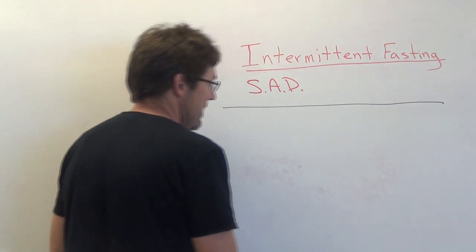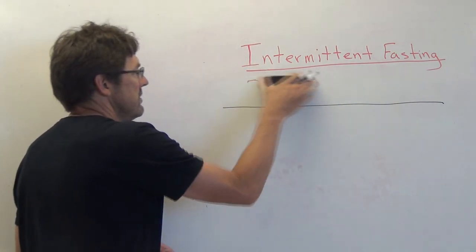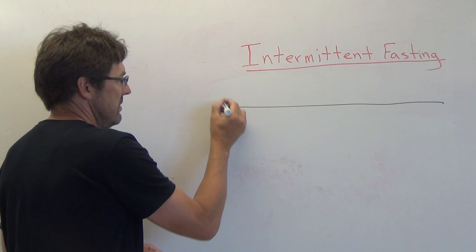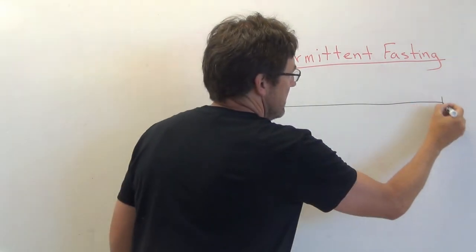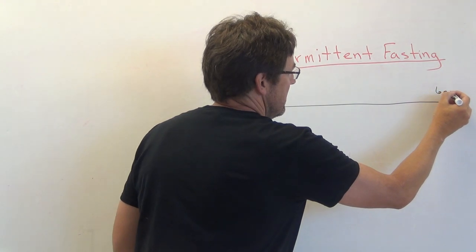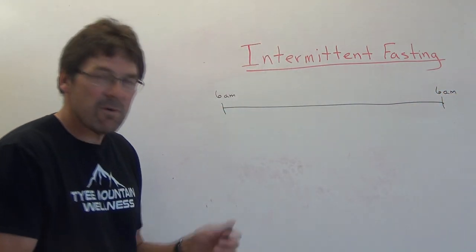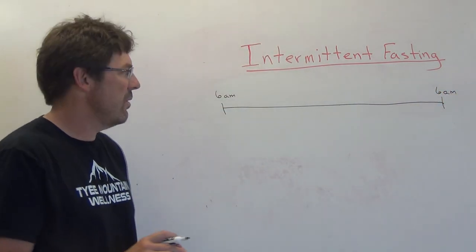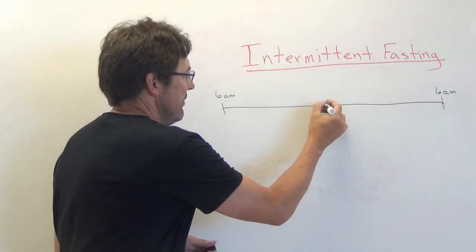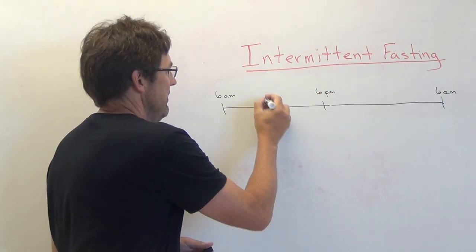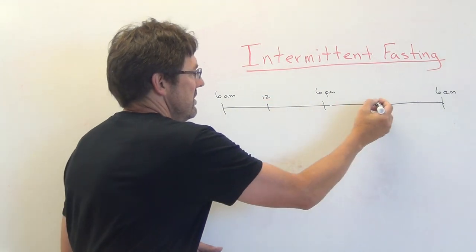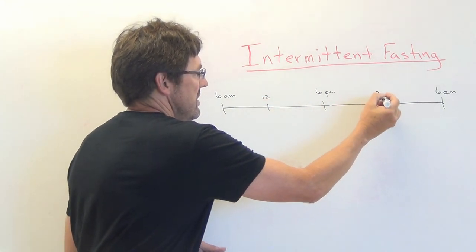But let's start by looking at the standard American diet and what that looks like on a timeline. You know how I like lines. So here's our line. On this end, this is going to be 6 a.m. And this is going to be 6 a.m. So that represents obviously a 24 hour period. Let's put in for reference 6 p.m. And we'll even put in noon and midnight.